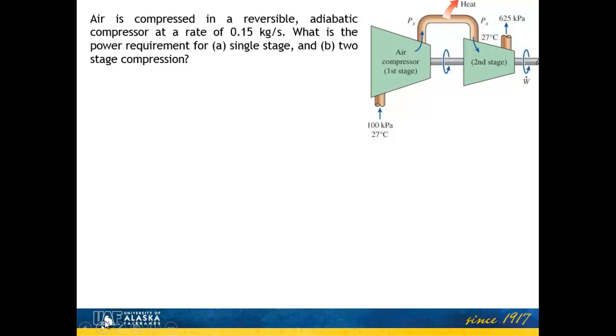Over on the right here, we have a diagram showing a two-stage compression. Here are inlet conditions: 100 kPa and 27 degrees Celsius. If it's occurring in two-stage compression, it goes to an intermediate pressure of P sub X. Then heat is removed. It's still at a pressure of P sub X, but it has now been cooled down to 27, and it goes into the second-stage compression and comes to a final ultimate high pressure of 625 kilopascals.